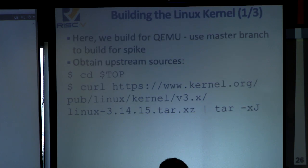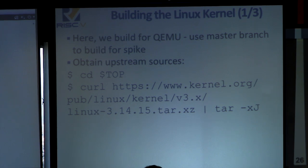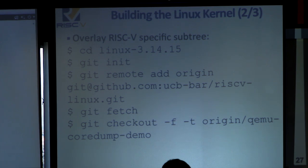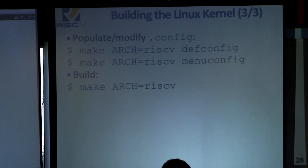Now we actually build the Linux kernel. For QEMU we're not using the master branch of RISC-V Linux — we use the qemu-core-dump-demo branch, which uses a different set of devices for QEMU compatibility. We pull the Linux upstream sources for 3.14.15, then overlay the RISC-V specific changes from the RISC-V Linux repo under UCB-bar on GitHub. We check out the qemu-core-dump-demo branch, set up the right default configuration for RISC-V and QEMU devices, customize with make menuconfig if desired, then build by typing make ARCH=riscv. This gives a vmlinux image we'll pass into QEMU.